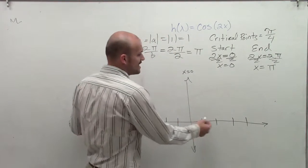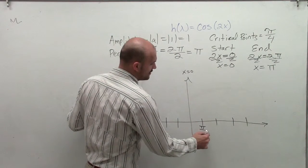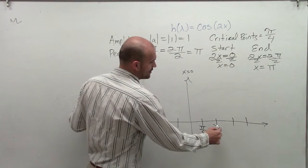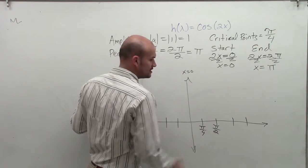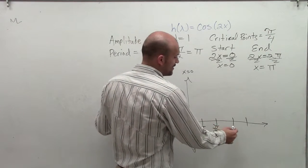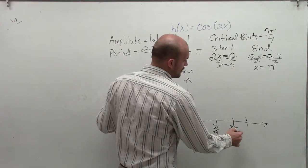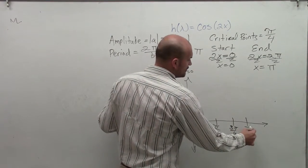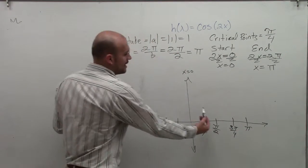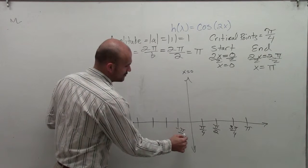To find each critical point, I just need to add π over 4. So π over 4 plus π over 4 is π halves, π halves plus π over 4 is 3π over 4, and then 4π over 4, which is π. I can also now go in the negative direction with the same values.